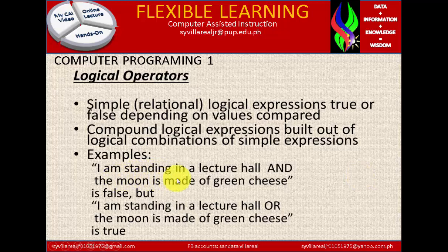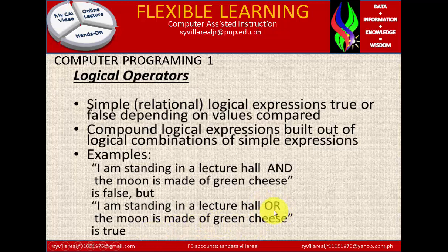For example: 'I am standing in a lecture hall AND the moon is made of green cheese.' The use of AND, which we discussed in lecture number 8, makes this false. But 'I am standing in a lecture hall OR the moon is made of green cheese' is true. Here we use OR, which is the double pipe. In computer terms, AND is multiplication and OR is addition.